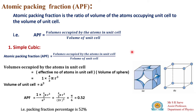Atomic packing fraction is defined as the ratio of the volume of atoms occupying the unit cell to the volume of the unit cell. That means: how many effective atoms are in the unit cell, multiplied by the volume occupied by each atom, divided by the total volume of the unit cell.